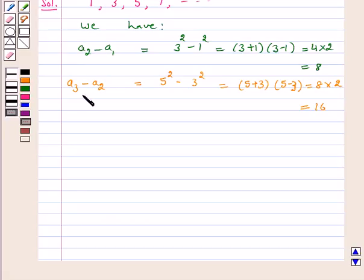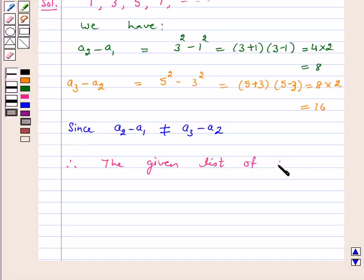Hence, we have seen that A(k+1) minus A(k) is not the same every time. That is, since A2 minus A1 is not equal to A3 minus A2, therefore the given list of numbers does not form an AP.